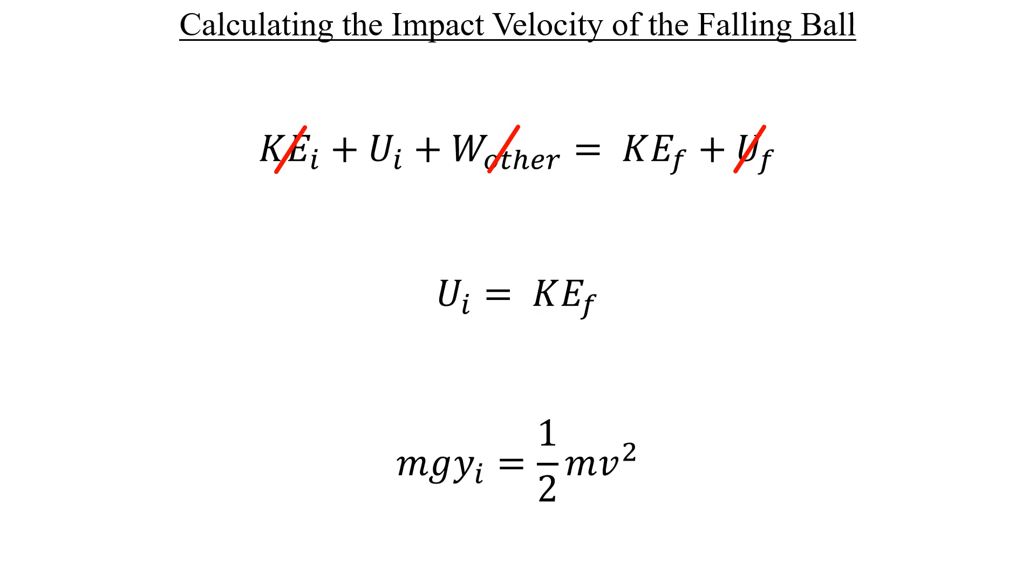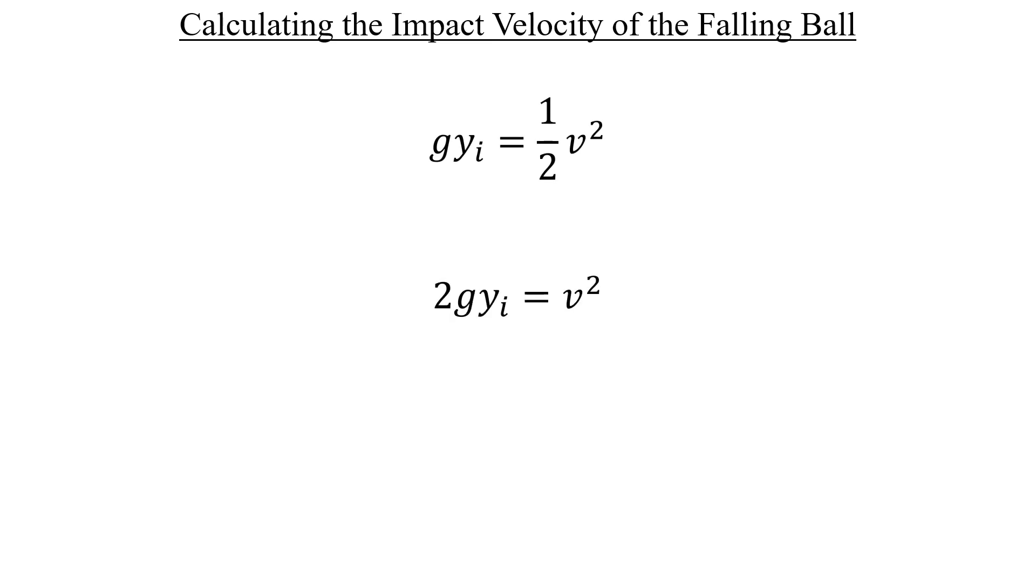Notice that we have mass on both sides of the equal sign. Let's divide that out and work towards solving for v. I'll multiply both sides by 2 and take the square root. However, we need to be careful here. We can't use a positive square root because that represents an upwards velocity, and that doesn't really apply to an object that's falling down.